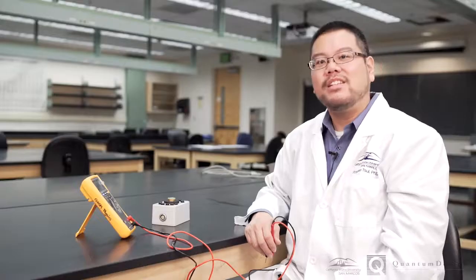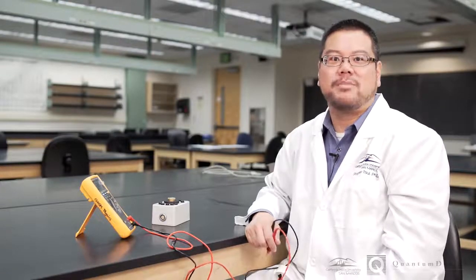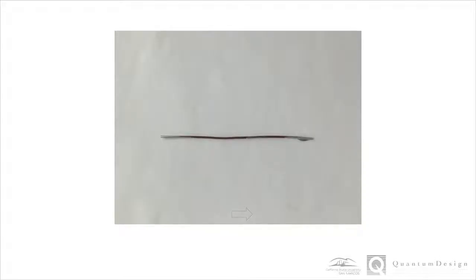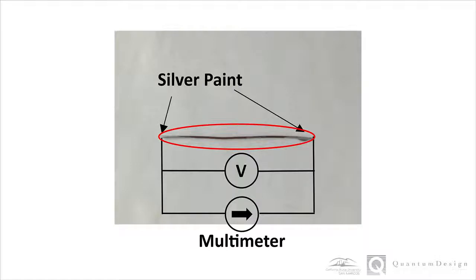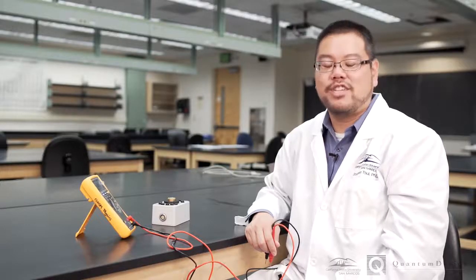0.2 ohm. That's quite a bit more than we would expect from such a small sample of copper. Why is this? Well, look at what's between the probes. It's not just copper wire. You have the wiring and also the silver contacts contributing to the measurement load. In other words, a two-wire measurement also picks up the contact resistance that's in series with the sample. So it's not a true characterization of the material.